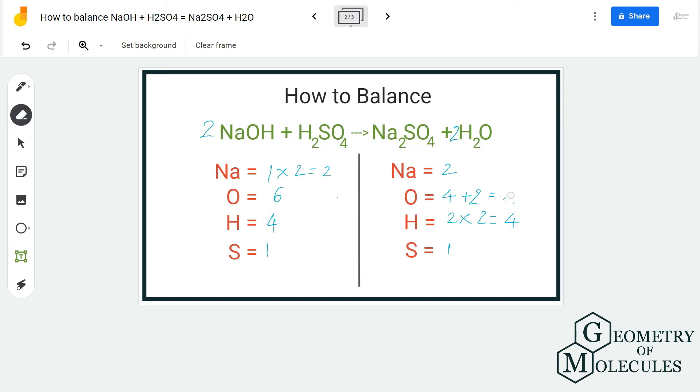By adding 2 NaOH and here making it 2 H2O, so this is the balanced equation in which we are getting the final equation as 2 NaOH plus H2SO4 gives us Na2SO4 plus 2 H2O.